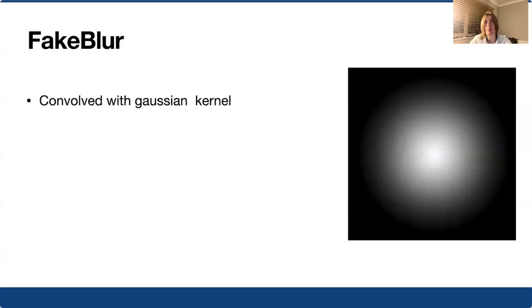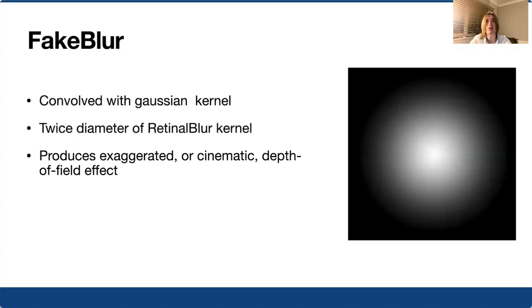In the fake blur condition, we simply convolve out of focus content with a Gaussian kernel of twice the diameter of that used in the retinal blur condition. This produces an exaggerated depth of field effect commonly used for artistic purposes in computer graphics. It makes no attempt to be physically accurate and does not account for focus cues encountered from viewing the display.